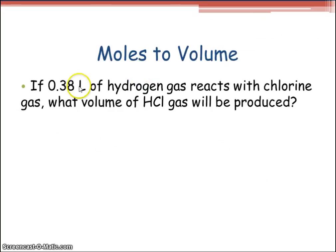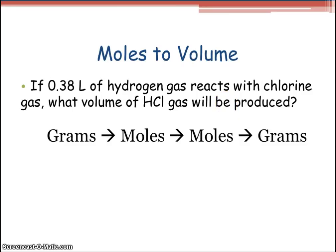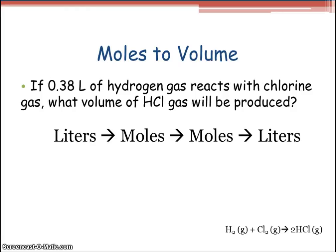Moles to volume. If 0.38 liters of hydrogen gas react with chlorine gas, what volume of HCl gas will be produced? Using the grams-to-moles-to-moles-to-grams formula, we can substitute liters for grams — that relates back to the mole map from the beginning. So we use liters to moles to moles to liters. The equation is: H₂ gas + Cl₂ gas yielding 2HCl gas. Starting with 0.38 liters.